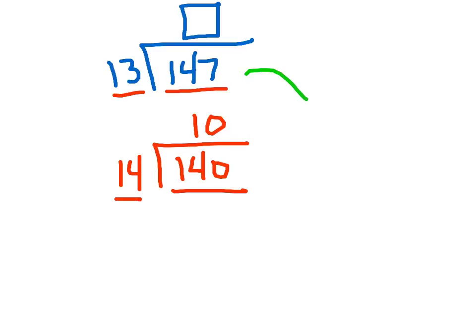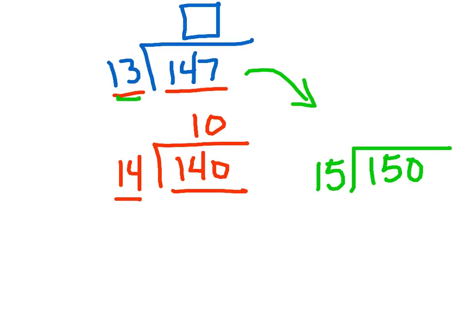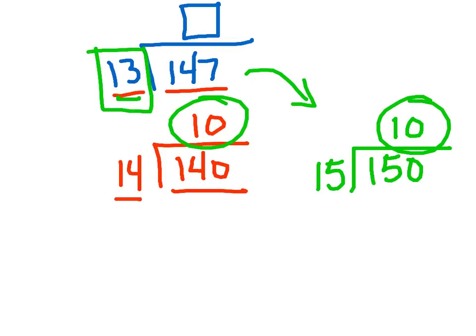Or, you could have even taken that problem and said, just round it to $150. And then looking at 13, that's close to 15. So in that case, $150 divided by 15 would have gotten you 10. So we can basically say that we would get about 10 posters costing $13 each out of our $147.